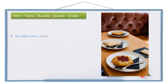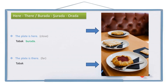The plate is here. I'm talking about this plate — it's close to me, so I say the plate is here. In Turkish: tabak burada. How about this one? The plate is there — the plate is far from me, so I say the plate is there. In Turkish: tabak orada. So here is burada and there is orada.